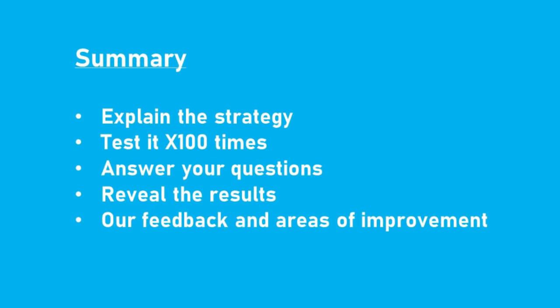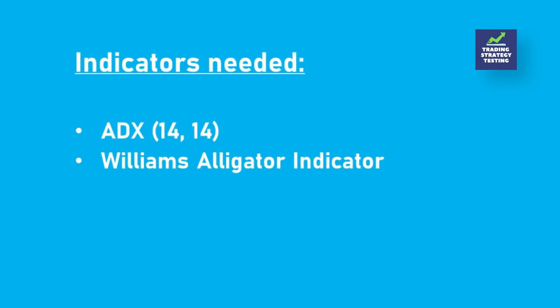We will start by explaining the strategy as well as the indicators we will be using, and share some practical trade examples. Once done, we will start testing the strategy 100 times and answer some of the questions left in the comments. We will then reveal the results and whether we approve the strategy or not. This strategy relies on two indicators: the ADX with the same settings used in a previous video, and the Williams Alligator indicator in its basic settings.